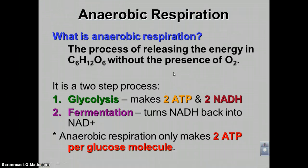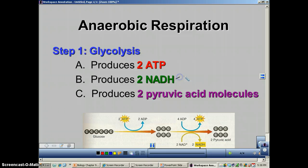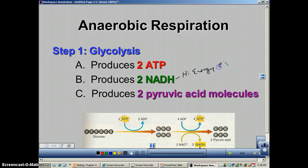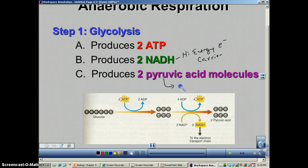Fermentation is going to take the place of the ETC in regards to turning the NADH back into NAD+. Let's revisit glycolysis. Remember this occurs in the cytoplasm, and glycolysis is going to make three things: two molecules of ATP, two molecules of NADH — which is a high energy electron carrier. Normally, if there was oxygen available, it would send this to the electron transport chain. And then you also have two pyruvic acid molecules, which would normally go to the Krebs cycle, but without oxygen, they're going to go to the fermentation step.